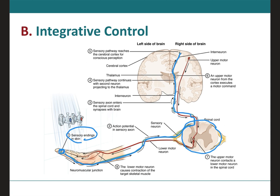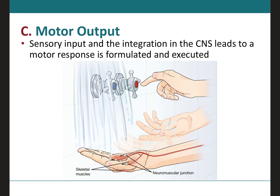Once it reaches the brain, it will integrate this information — this is the second step, the integrative control. Once this information is processed in the central nervous system, it leads to a motor response or motor output. The red neuron represents this motor response, which comes down from the brain, passes through the spinal cord, and exits all the way to the tip of your finger to remove your hand in case the water is hot. Once integrated, the motor response allows you to adjust the temperature of the water — this is how you interpret the information initially received by the sensory receptors.